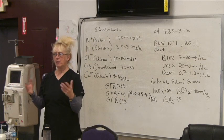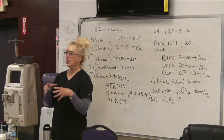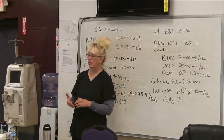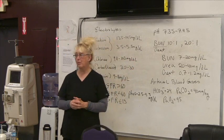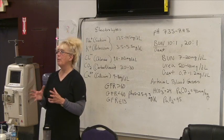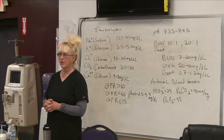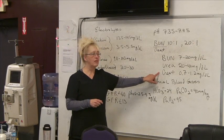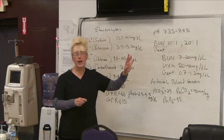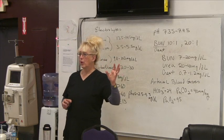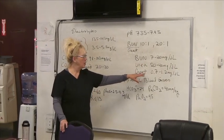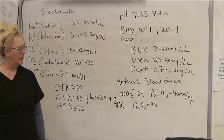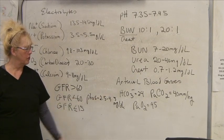When people are very dehydrated — your mouth gets dry, you get tired, your heart beats fast, your blood pressure drops — you're actually dehydrating your kidneys as well. As you start to dehydrate and don't have enough fluid volume flowing through your body, the BUN creatinine ratio can go up because there's a discrepancy in the flow through the nephrons. The BUN is 7 to 20 milligrams per deciliter, urea is 20 to 40, and creatinine is 0.7 to 1.2 milligrams per deciliter.